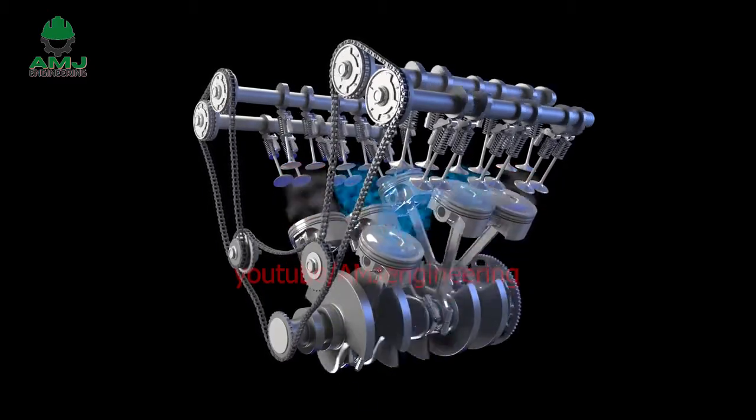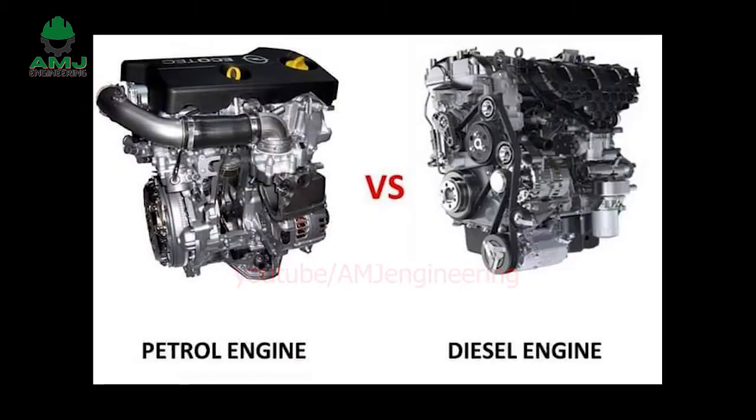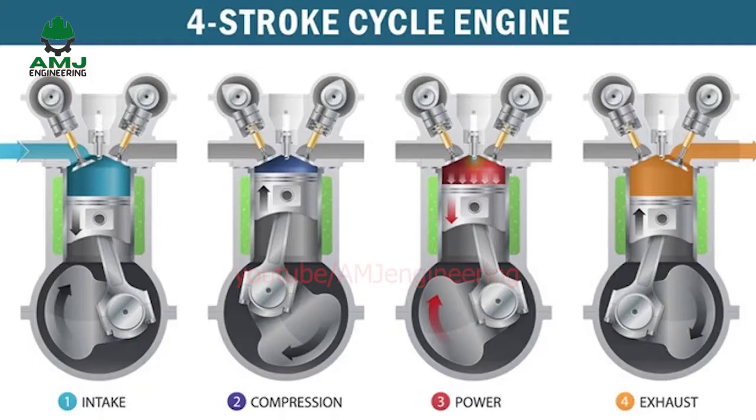There are two kinds of internal combustion engines: the spark ignition gasoline engine and the compression ignition diesel engine. Most of these are four-stroke cycle engines, meaning four piston strokes are needed to complete a cycle.